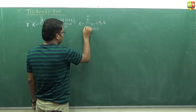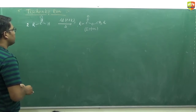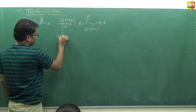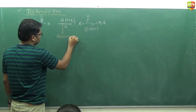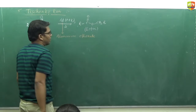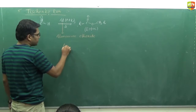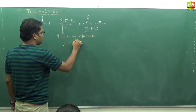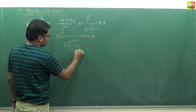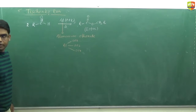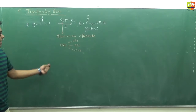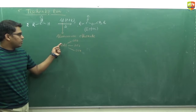See how this reaction takes place. This reagent, aluminium ethoxide, behaves as a Lewis acid because it has one vacant p orbital, so it can accept a pair of electrons. It is similar to AlH₃, BH₃ — when aluminium has three bonds, it has one vacant p orbital, so it can accept one pair of electrons and behaves as a Lewis acid.